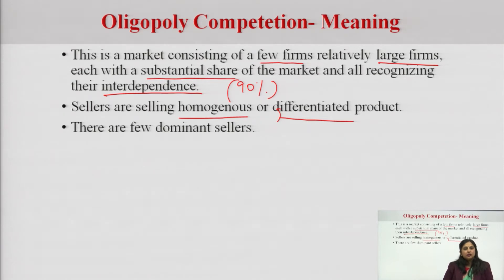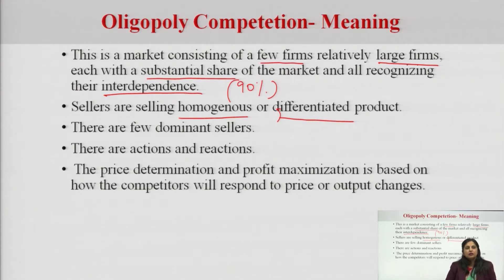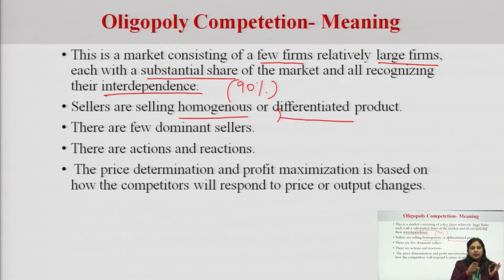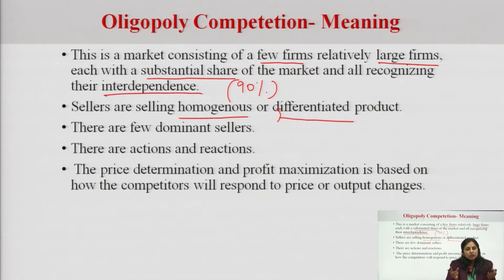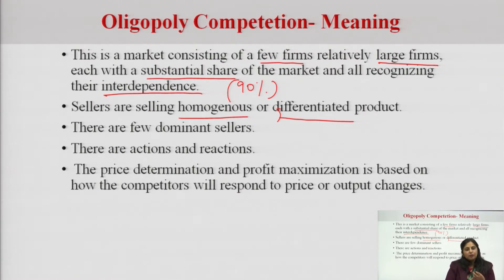There are few dominant sellers — dominant meaning they have captured a huge market share or are supplying huge output. There are actions and reactions again; price determination and profit maximization are based on how competitors will respond. What one is doing, the other may or may not copy. This creates a dilemma for the seller: if I make some change, will my rivals copy it or not? What are the consequences either way? Because I do not know how my rivals would react, that becomes a problem of output and price determination under the oligopoly market structure.